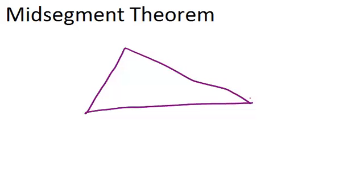On this triangle, I'm going to draw the midpoint on two of the sides. Remember that a midpoint is right in the middle of a line segment, and so it cuts the line segment into two congruent segments. I'm also going to draw the midpoint on this side over here.